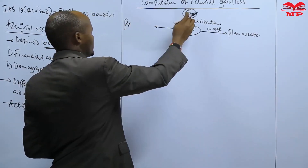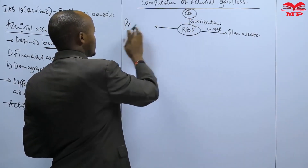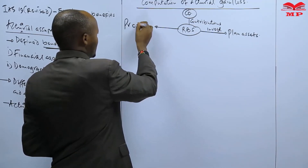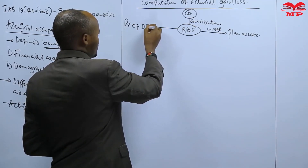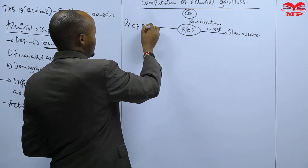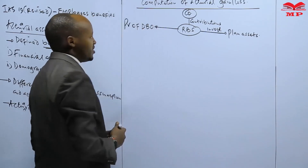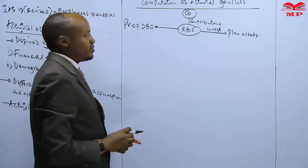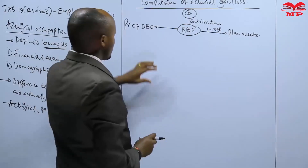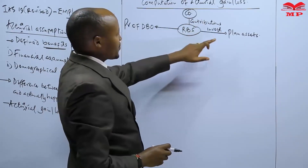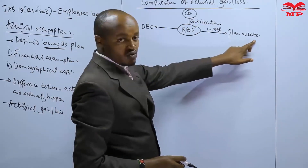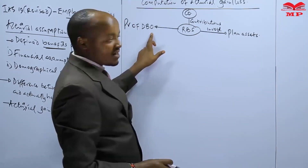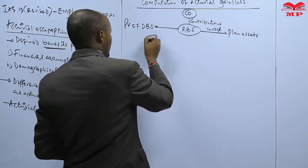This retirement benefit plan will also have an obligation to pay benefits to employees once they proceed for retirement. In the case of a defined benefit plan, the benefits payable to employees on retirement are known in advance. Therefore, the employer needs to get their present value, which is referred to as the present value of the defined benefit obligation. When computing actuarial gain or loss, we compute it in respect to plan assets and also in respect to the defined benefit obligation.